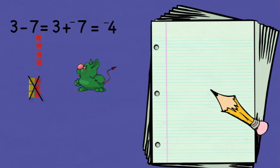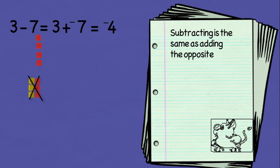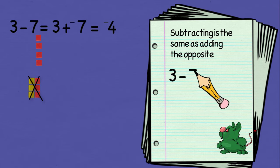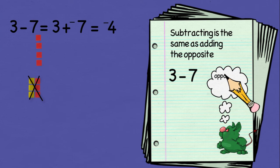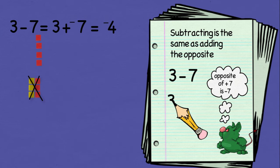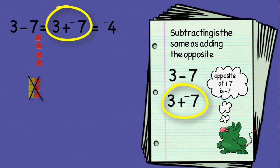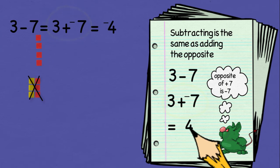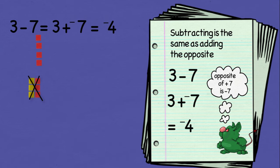And using my adding rules, I get negative 4 as my final answer. Now I'm going to use the adding the opposite property. 3 minus positive 7 — the opposite of positive 7 is negative 7, so the problem becomes 3 plus negative 7. That's the same result I got when using my tiles, and just like with the tiles, the final answer is negative 4. So by looking at subtraction as adding the opposite of a number, I can solve the problem without using my tiles.